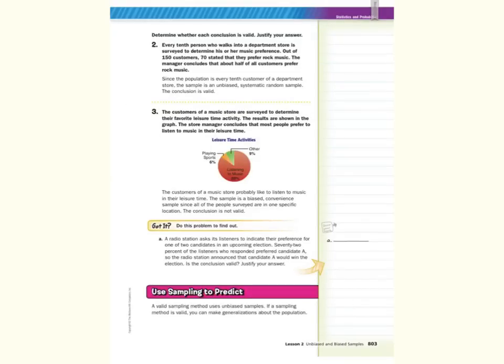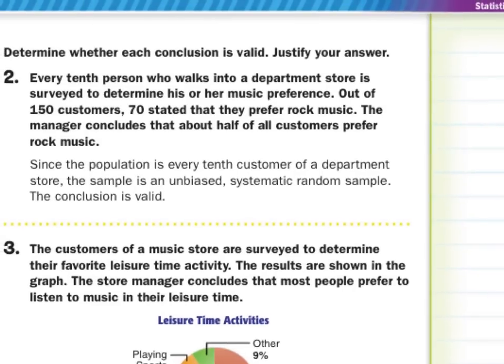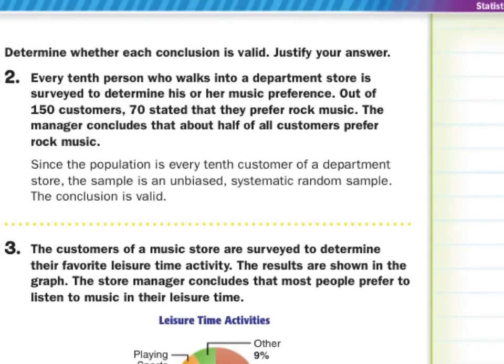Next guided example: every 10th person who walks into a department store is surveyed about music preference. Out of 150 customers, 70 stated they prefer rock music. The manager concludes that about half of all customers prefer rock music. Every 10th person — that's systematic random, which is unbiased. And 70 out of 150 is just a little under half. Since he's saying about a half, this is actually a valid conclusion.